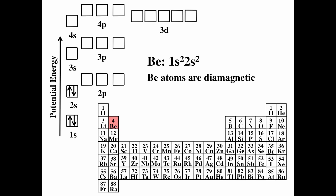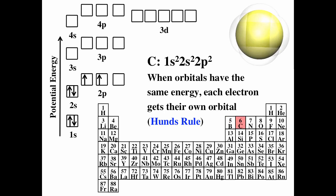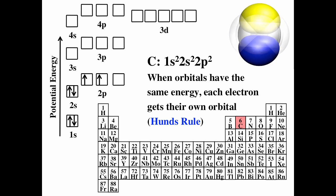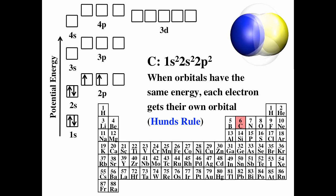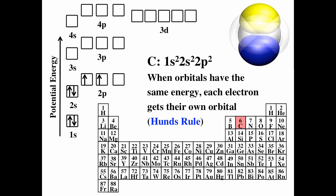Element number five is boron: 1s2, 2s2, 2p1. Boron has an unpaired electron, so boron atoms should be paramagnetic. For carbon, we add one more electron and put it in its own orbital following Hund's rule — orbitals of the same energy each get their own electron as much as possible. The electron configuration for carbon is 1s2, 2s2, 2p2.